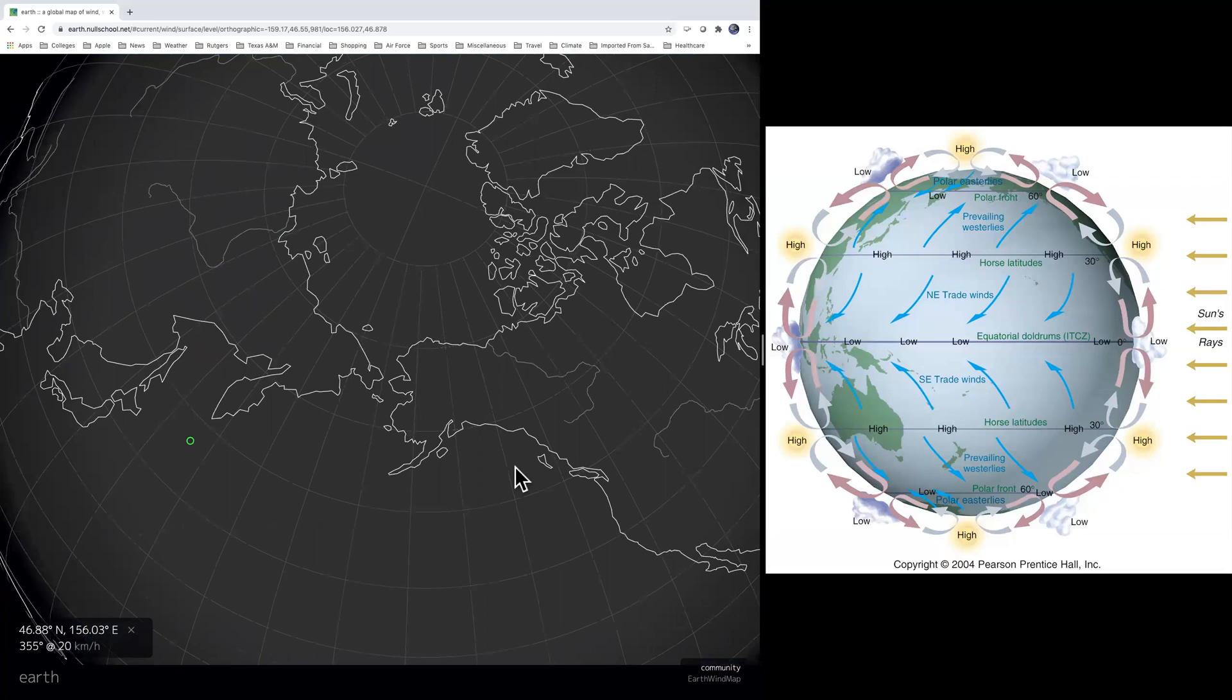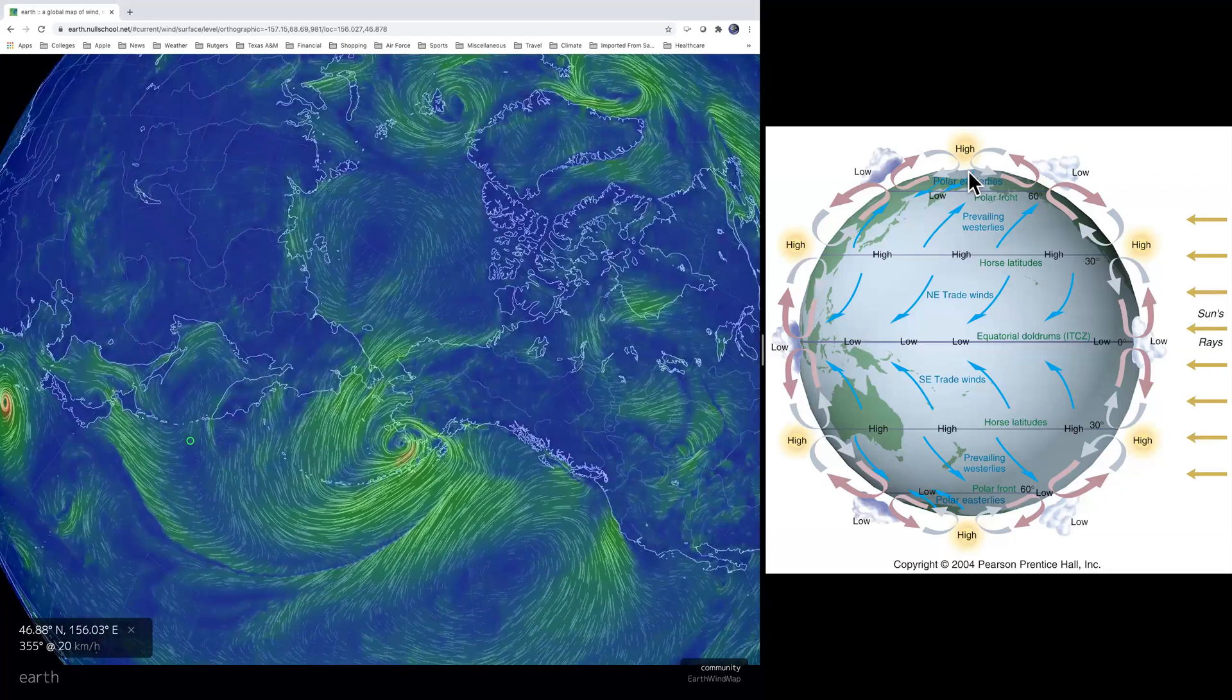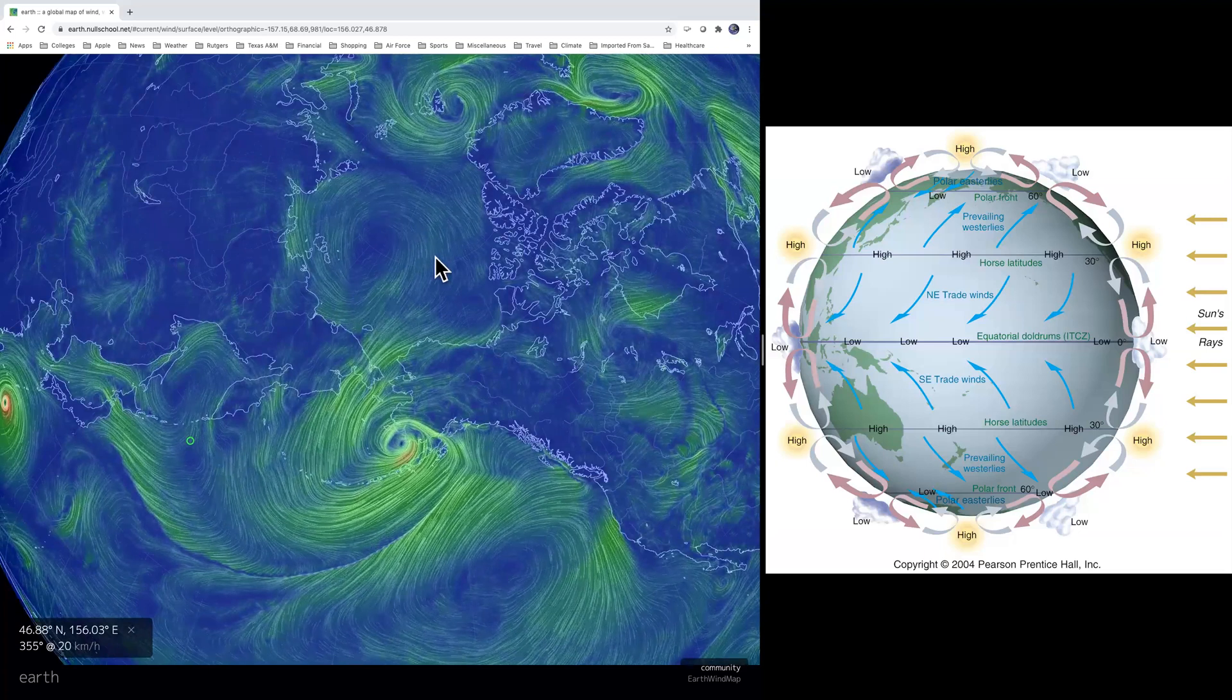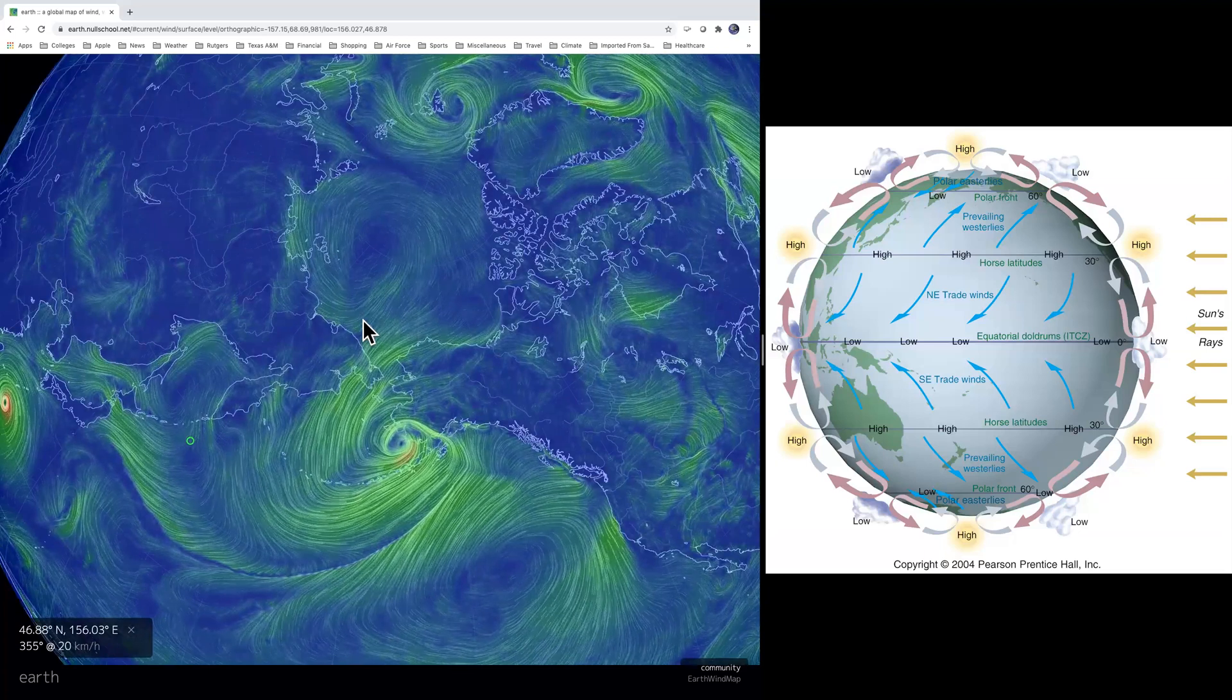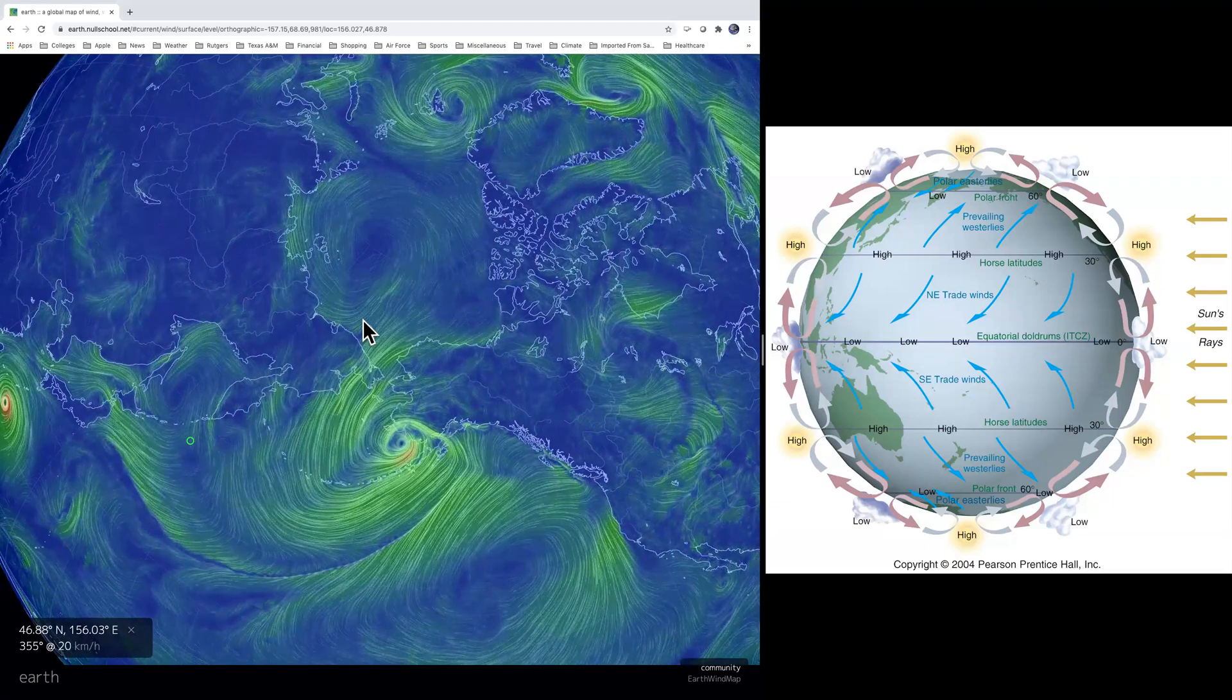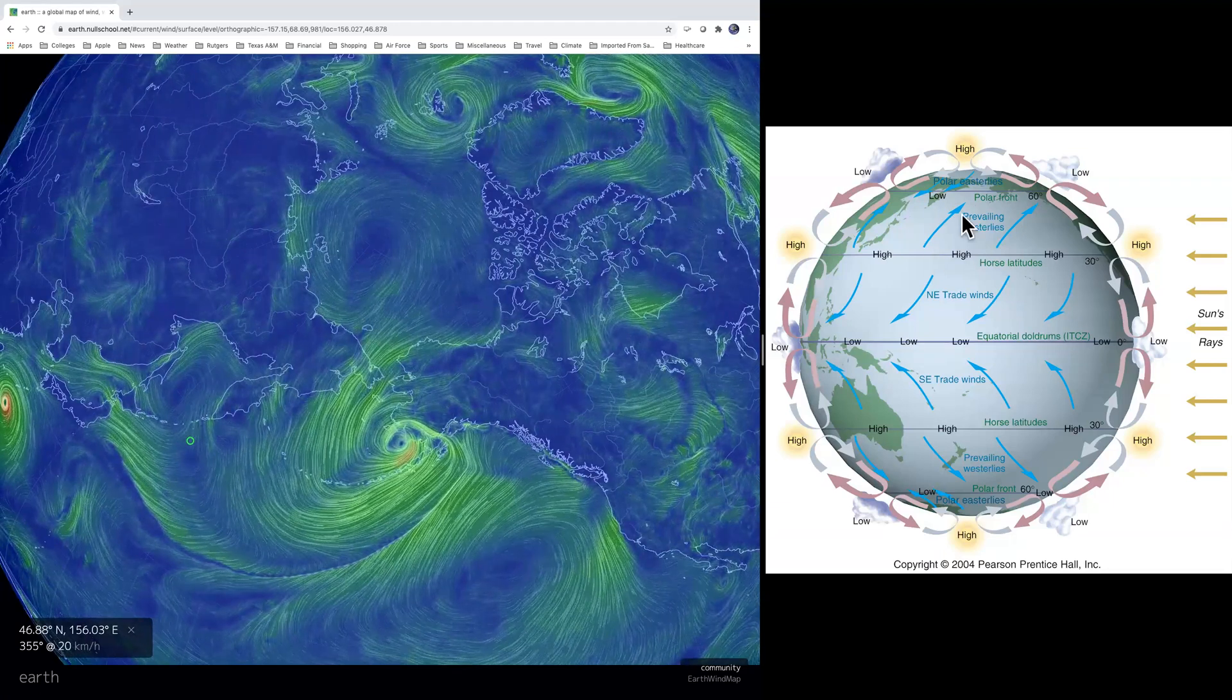Now, let's look at the pole regions. Notice high pressure polar easterlies. Here they are. See it? High pressure. These are the polar easterlies. So, you know, in this case, the model is actually pretty good. It's not idealized like what you see here.